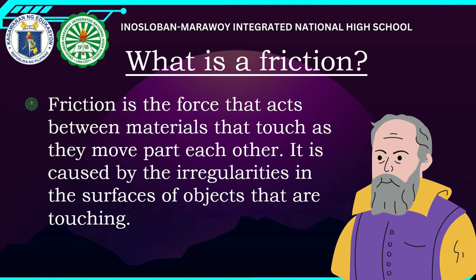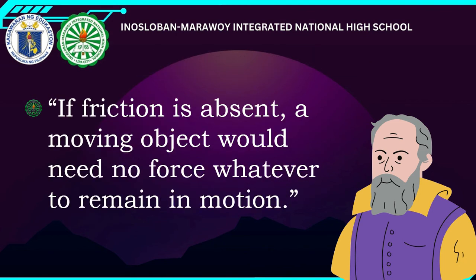Friction is the force that acts between materials that touch as they move past each other, caused by irregularities in the surfaces of objects. If friction is absent, a moving object would need no force whatsoever to remain in motion. When there is no friction on a surface, a moving object will continue moving — this is true and was later supported by Newton.